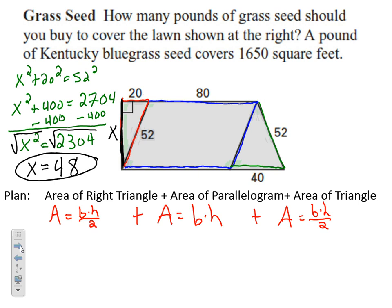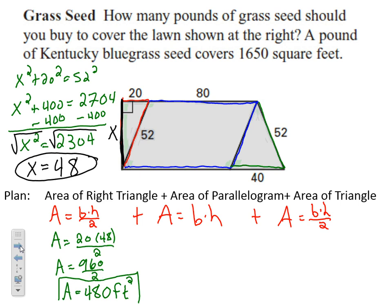Now that I know my height and I have a base for each one, I can solve each one for their area. My first right triangle: area equals base times height divided by 2, so area equals 20 times 48 divided by 2. Area equals 960 divided by 2, so the area of my right triangle equals 480 feet squared. Moving on to my second shape: area equals base times height. My base is 80 times my height of 48, so area equals 3,840 feet squared.